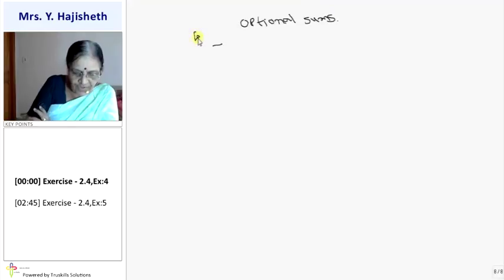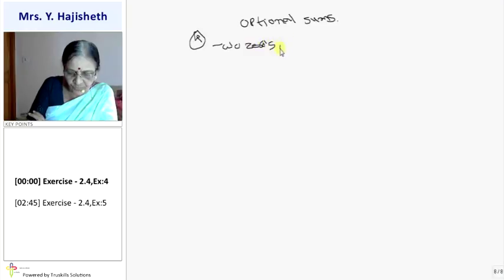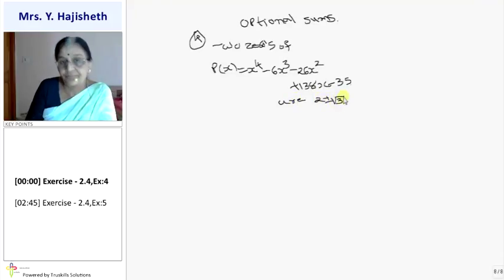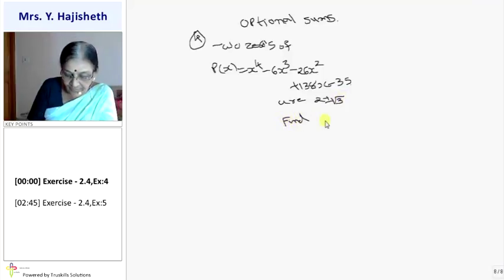So fourth sum I am doing here. Two zeros of p(x) = x⁴ - 6x³ - 26x² + 138x - 35 are 2 ± √3. Find other zeros. Question is same, only data they have made little bit difficult.